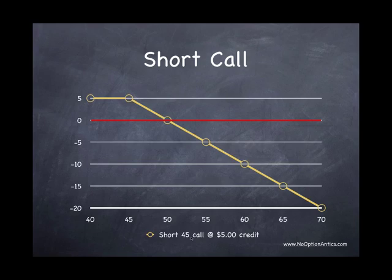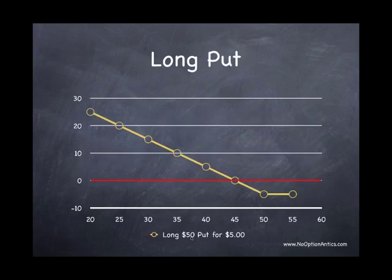So those are the short calls. Let's look at the puts now. Here is a risk graph of a long put, owning a put. And here is the $50 put that we're purchasing for $5. So you can see that by the risk graph here, and now we're starting to get an idea, that the most we can lose when we buy something is whatever we've paid for it.